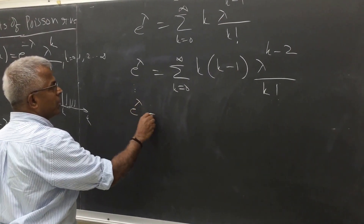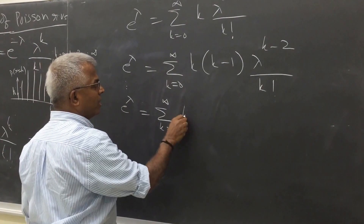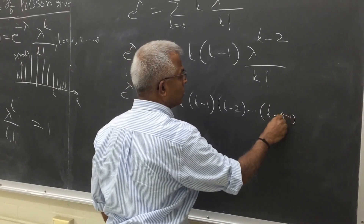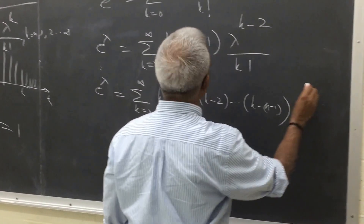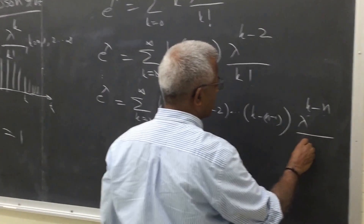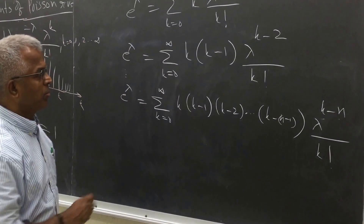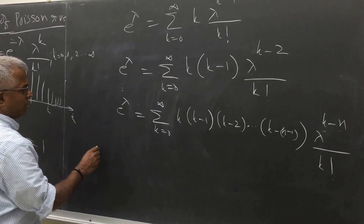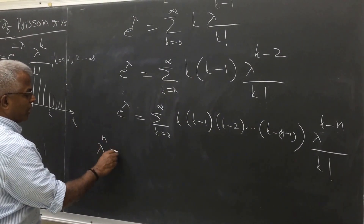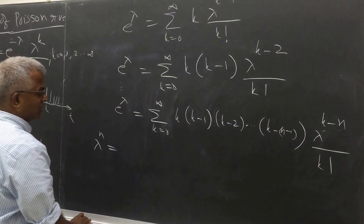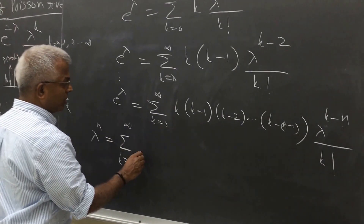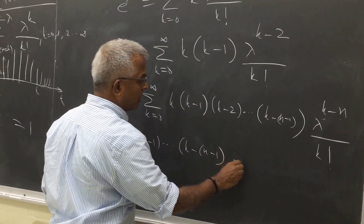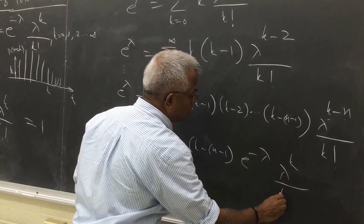If you do this n times, you get e raised to lambda equals the summation from k equal to 0 to infinity of k times k minus 1 times k minus 2, and so on, times k minus (n minus 1) — that is n terms — multiplied by lambda to the power k minus n over k factorial. Now multiply both sides by lambda to the power n, and bring e raised to minus lambda inside the sum.